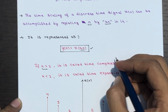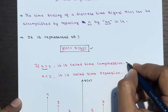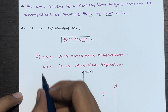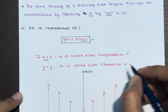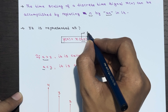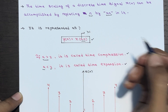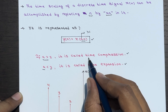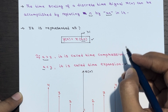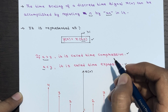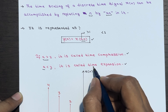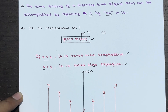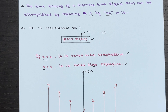When a is greater than 1, it is called time compression, and when a is smaller than 1, it is called time expansion. If a is greater than 1 then it is time compression, and when it is smaller than 1 then it is called time expansion.